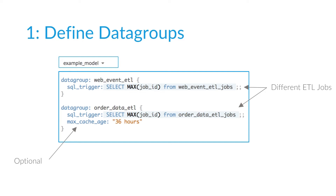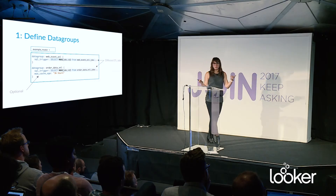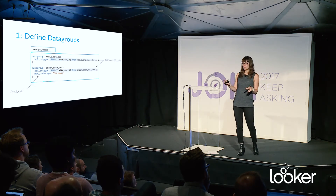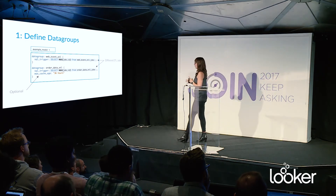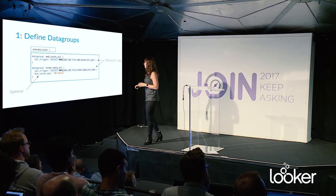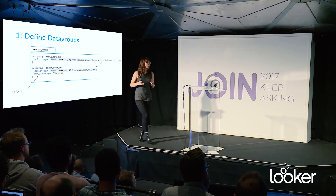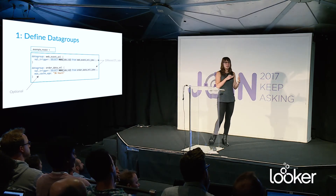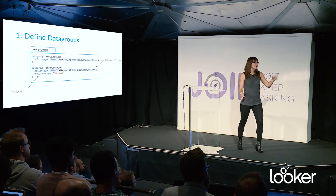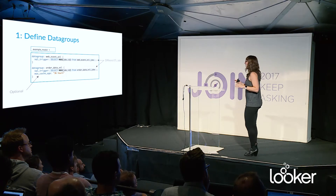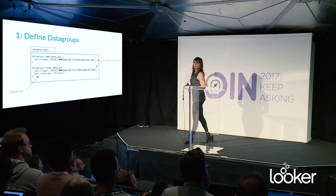I also added a parameter called 'max cache age.' Max cache age is optional — technically, SQL trigger value is optional too; you could use either to trigger your cache. What max cache age does is operate basically like 'persist for': after 36 hours, that's as old as the cache can ever be, so bust it if we hit 36 hours. We introduced this to create a secondary fail state. On my first data group without max cache age, the failure mode is to keep hitting the Looker cache indefinitely if the ETL job table doesn't get updated. When you have max cache age, the opposite applies — after 36 hours, just blow away the cache regardless, so you're guaranteed to eventually get fresh data.